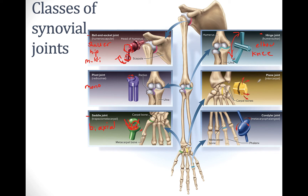Another joint found in the carpals as well as in the tarsals is the plane joint. This is when we have two flat surfaces — like flat planes — next to each other. They don't move a lot, but the joint does allow for some movement in two directions, making it a bi-axial joint.